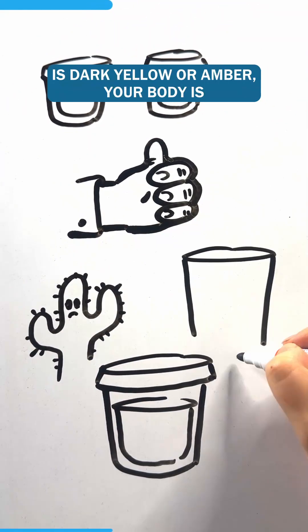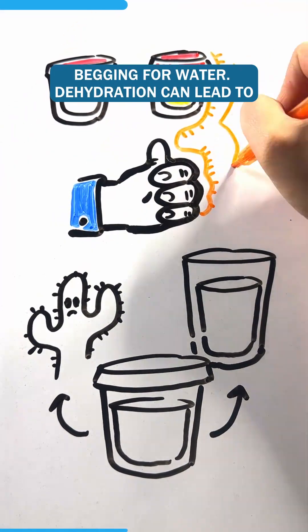But if your urine is dark yellow or amber, your body is begging for water.